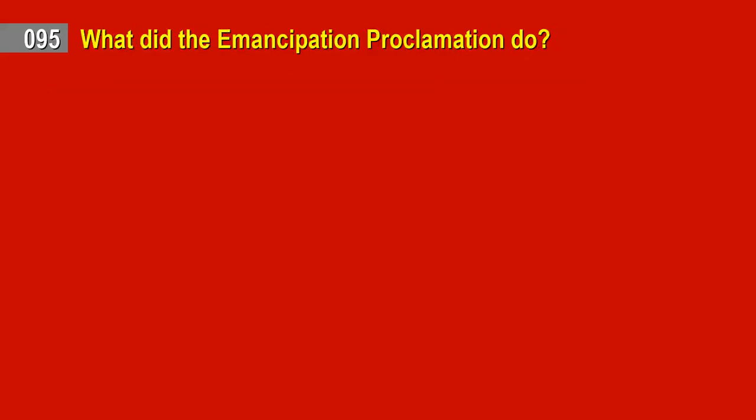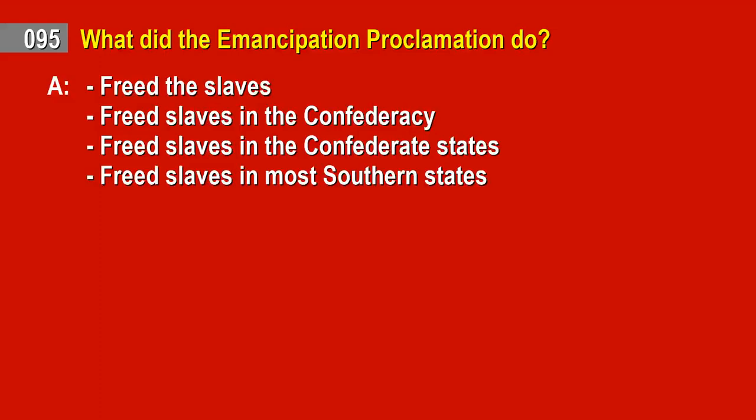Question 95. What did the Emancipation Proclamation do? Answer: Freed the slaves. Freed slaves in the Confederacy. Freed slaves in the Confederate States. Freed slaves in most southern states.